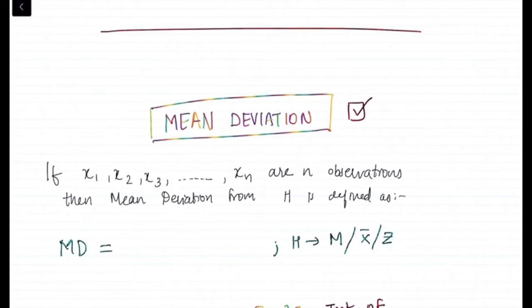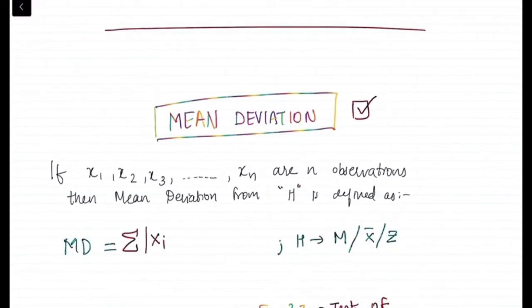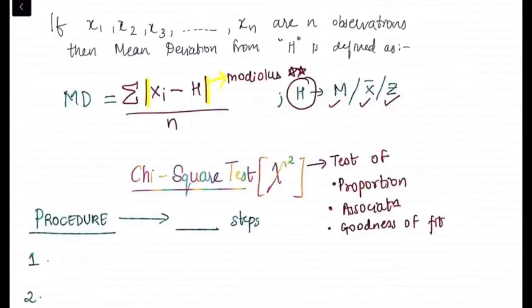Now coming to mean deviation. This is the data given, so we are supposed to find out the mean deviation. Mean deviation is equal to sigma xi minus μ into the modulus. Remember this because we need to convert the negative values into the positive ones.